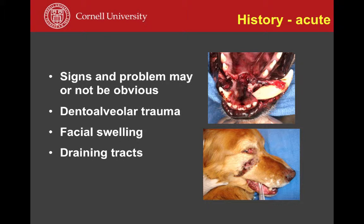Some problems have an acute presentation — a fractured tooth will be obvious upon visual inspection, and dental alveolar trauma will present with a luxated tooth and associated soft tissue injuries. Signs of an odontogenic infection include the animal suddenly having a swollen face or the appearance of a draining tract. Typically, extra-oral draining tracts are obvious to owners and clinicians, but oftentimes these draining tracts are inside the mouth and will not be easily recognizable.